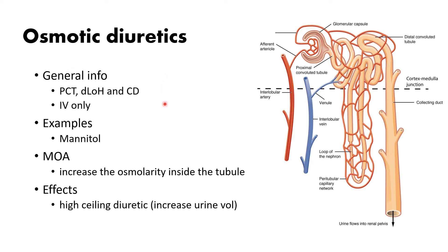General information: osmotic diuretics work at the level of the PCT, the descending loop of Henle, and the collecting duct. So basically all the regions of the kidney that are permeable to water — the PCT, the descending loop of Henle, and the collecting duct.